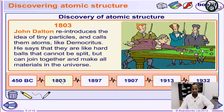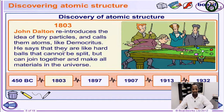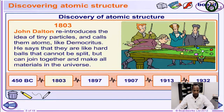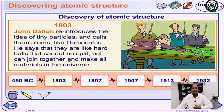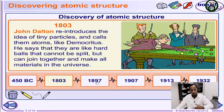In 1803, John Dalton reintroduced the idea of the particle and called them atoms, like what Democritus did. As a British scientist, he used an English name and called them atoms. He said they are like hard balls and cannot be split, but they join together. That was his whole contribution.